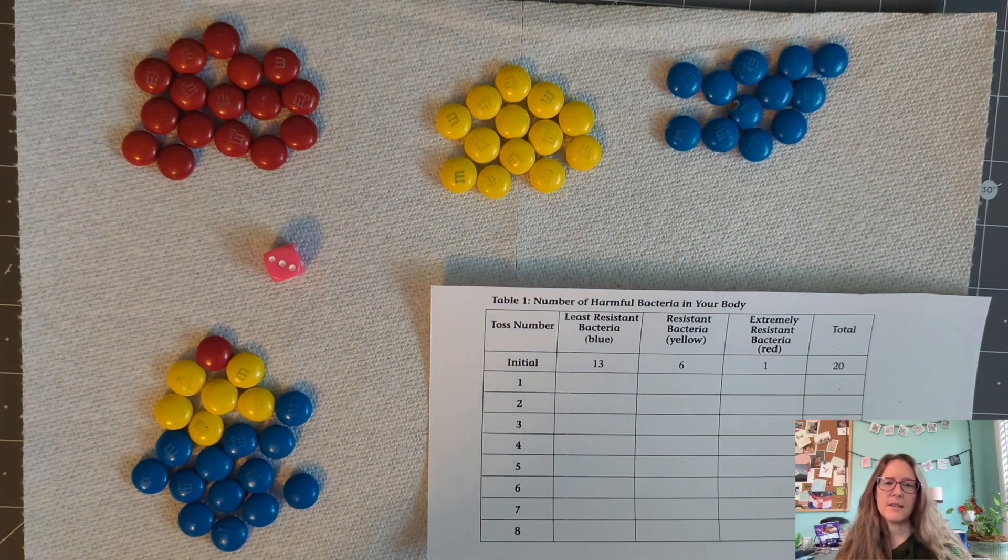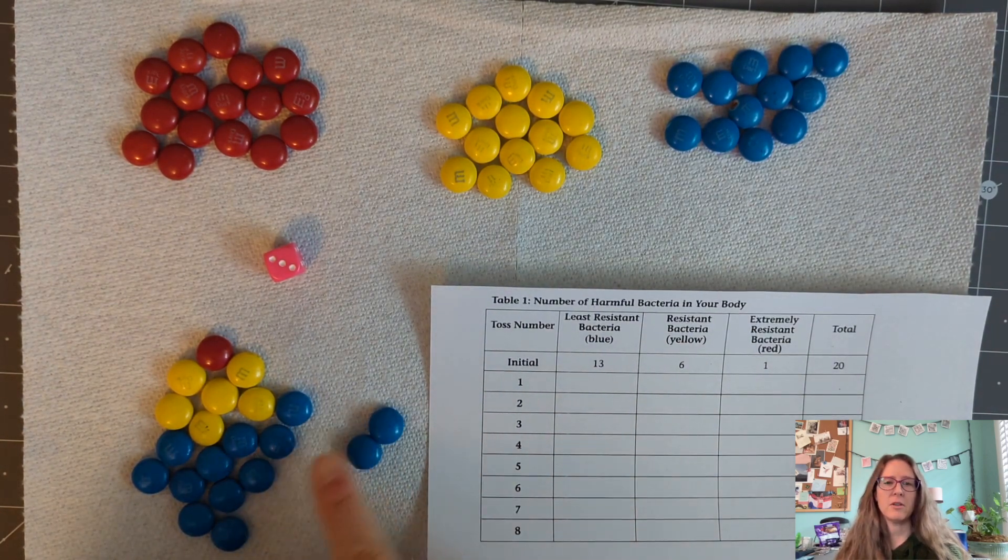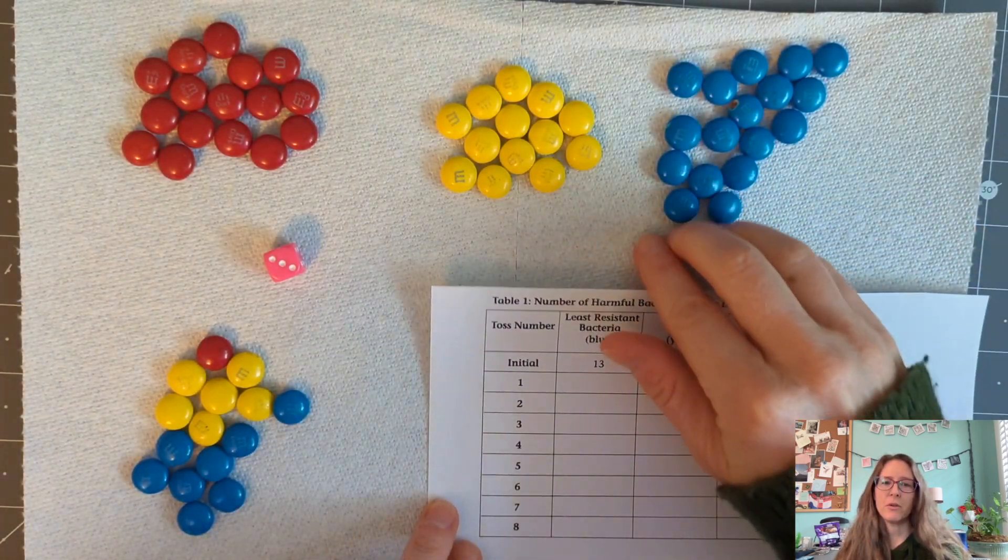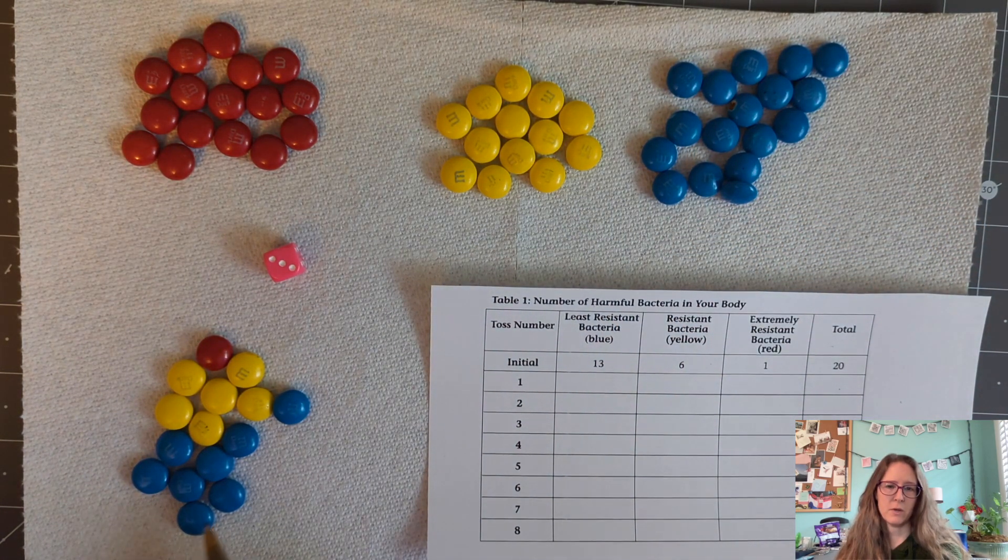So in this activity, students start with a population of bacteria that varies in its resistance to the antibiotic. This is shown using the three different colors of tokens.